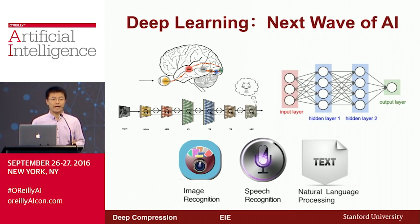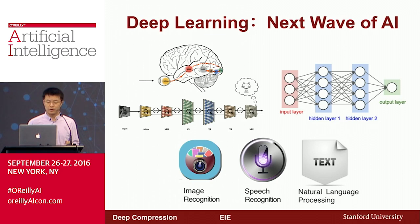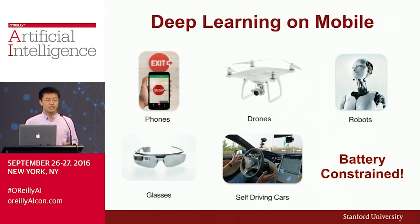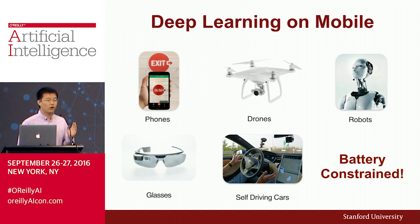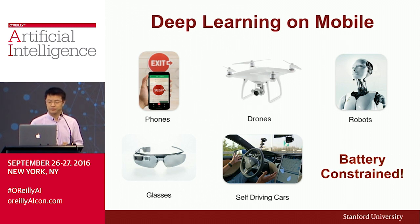Deep Learning is the next wave of AI. It has a wide range of applications, ranging from image recognition, speech recognition, to natural language processing. Especially Deep Learning on mobile has attracted a lot of attention recently, ranging from phones, drones, robots, glasses, and self-driving cars.